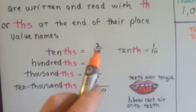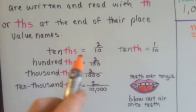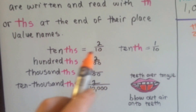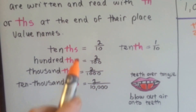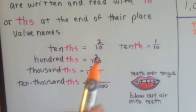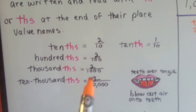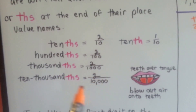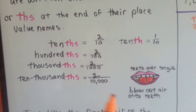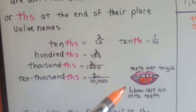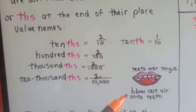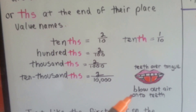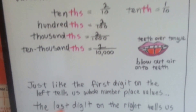But when we have more than one it's plural: two-tenths — we add an s. Two-hundredths, two-one-thousandths, two-ten-thousandths. We put our teeth over our tongue — 'th' — and blow out air onto them very lightly.